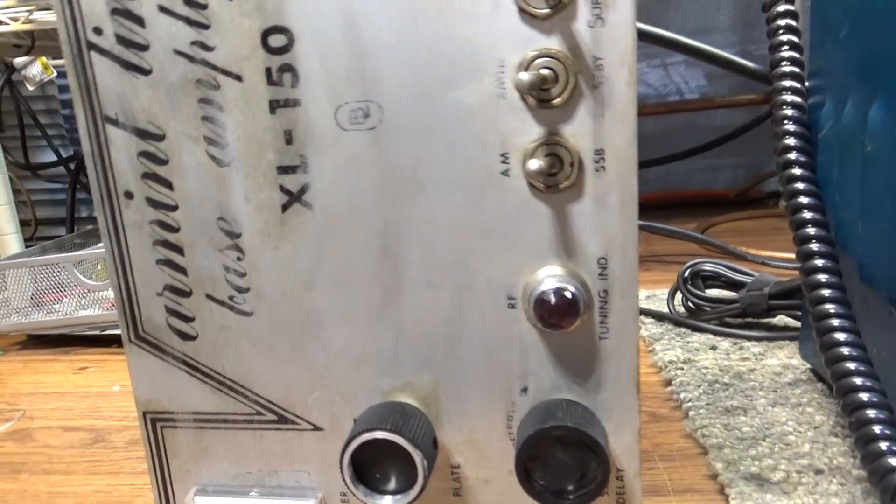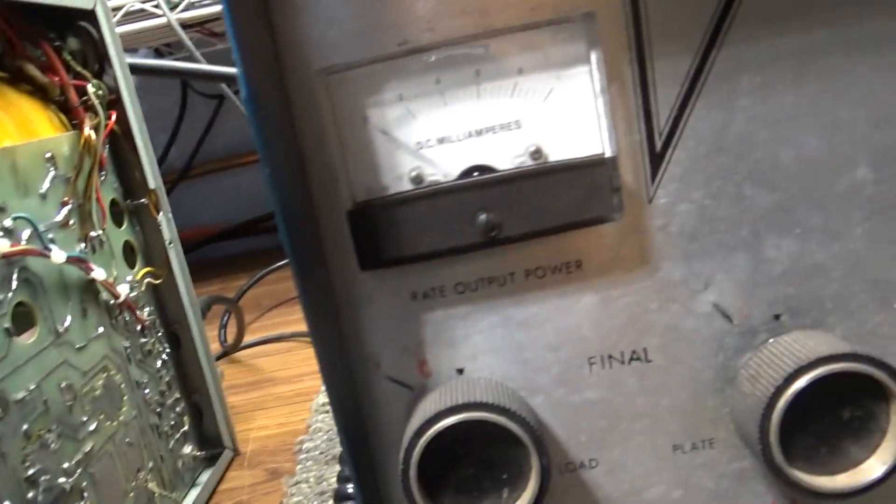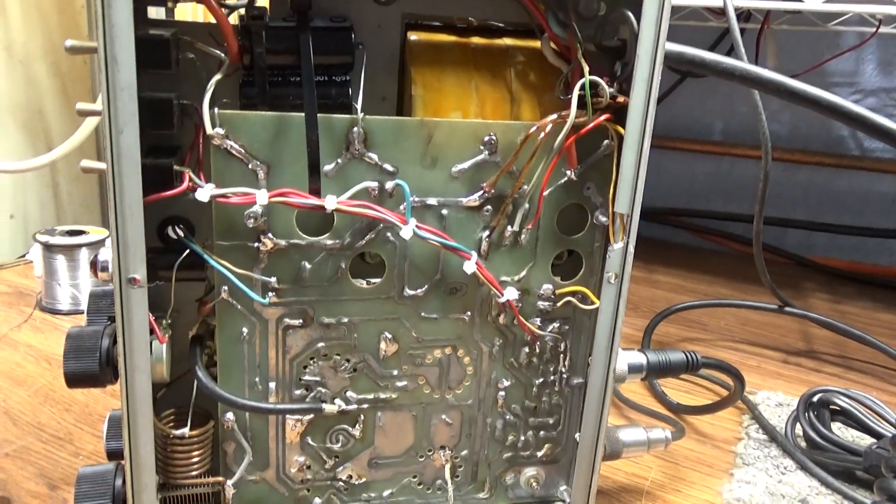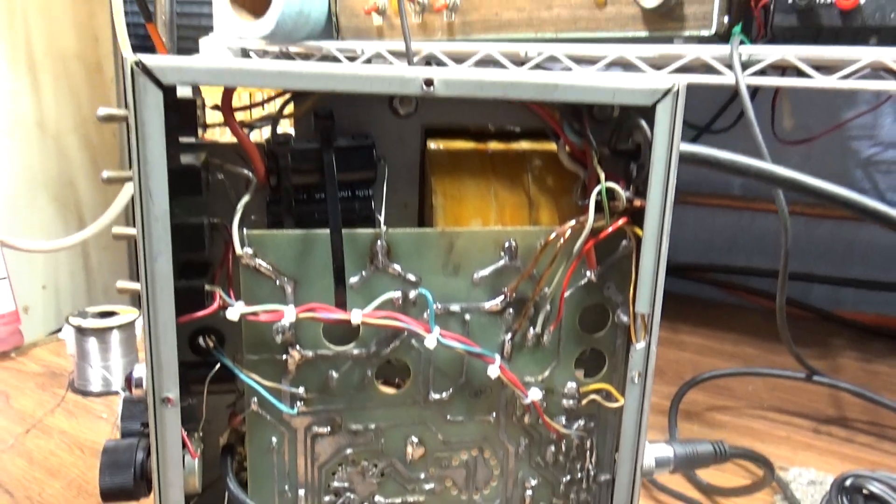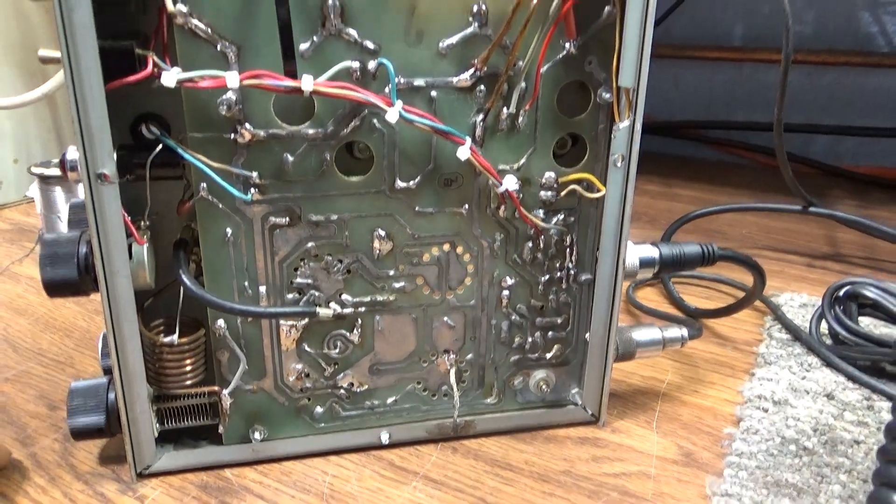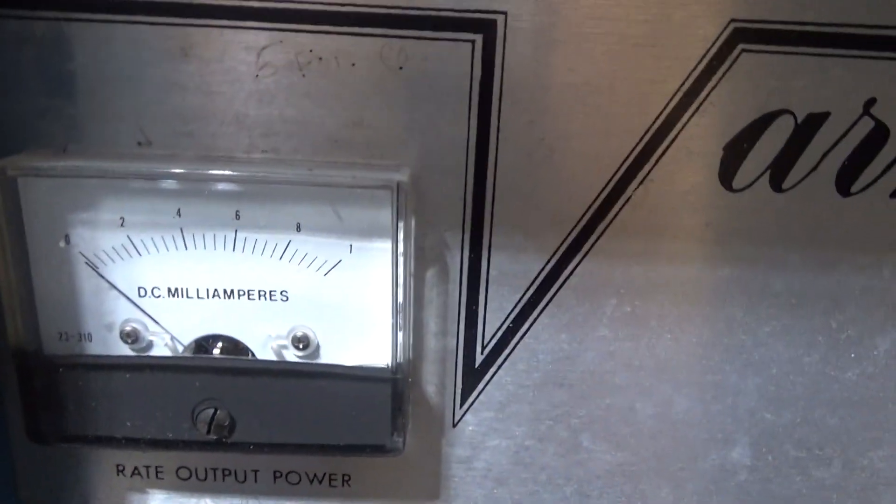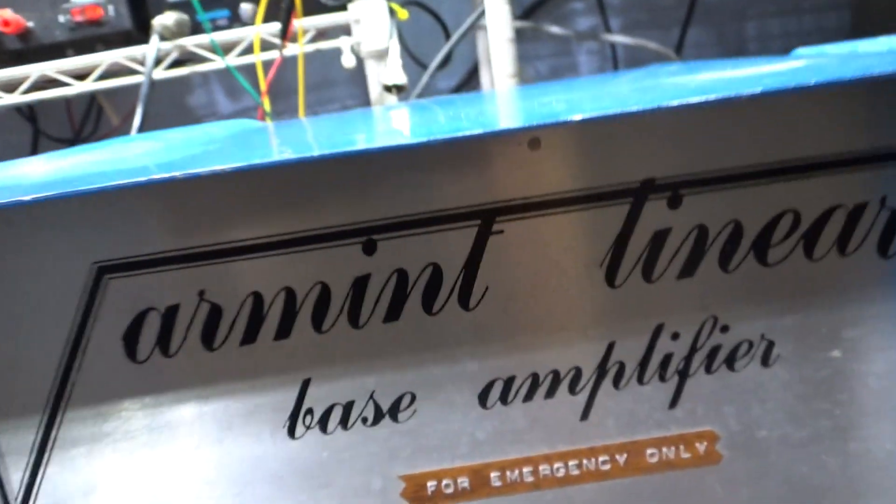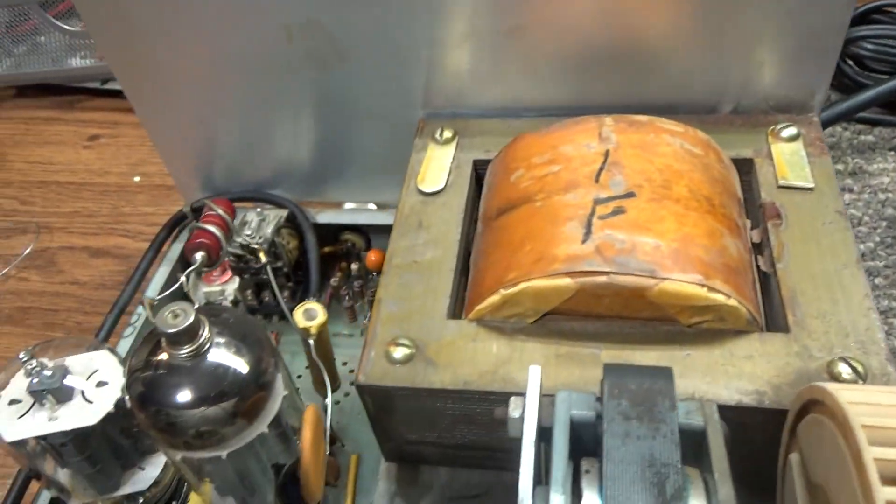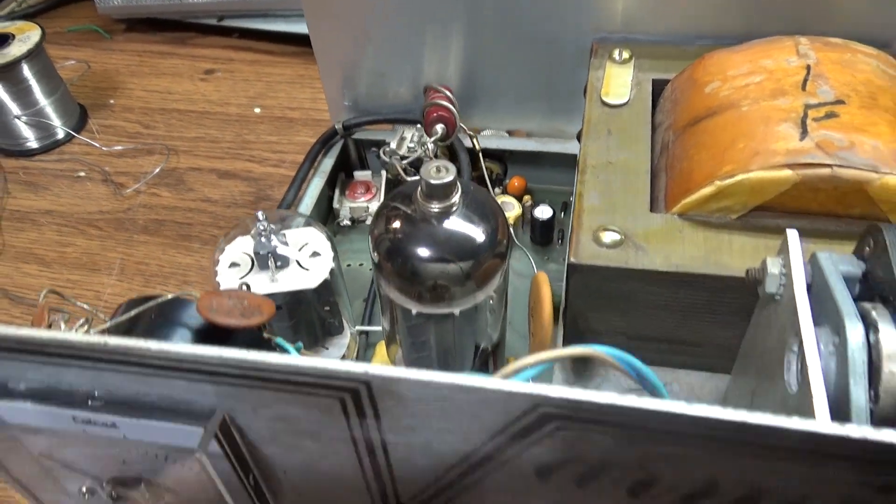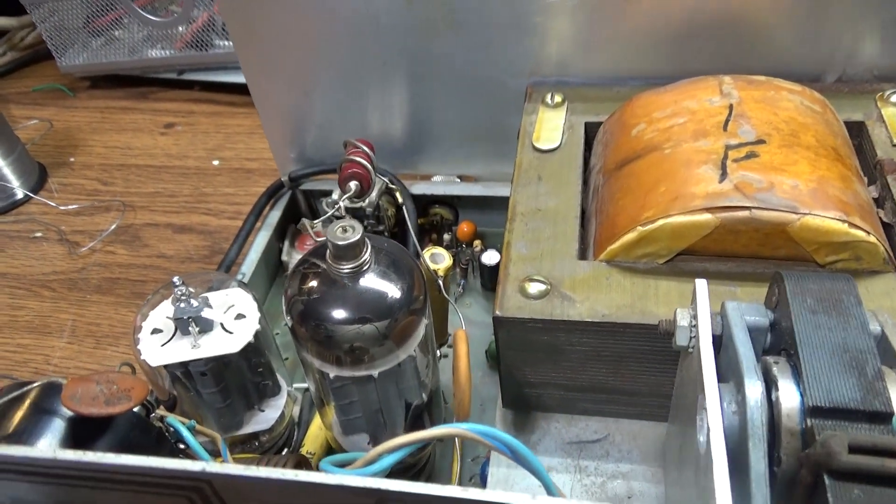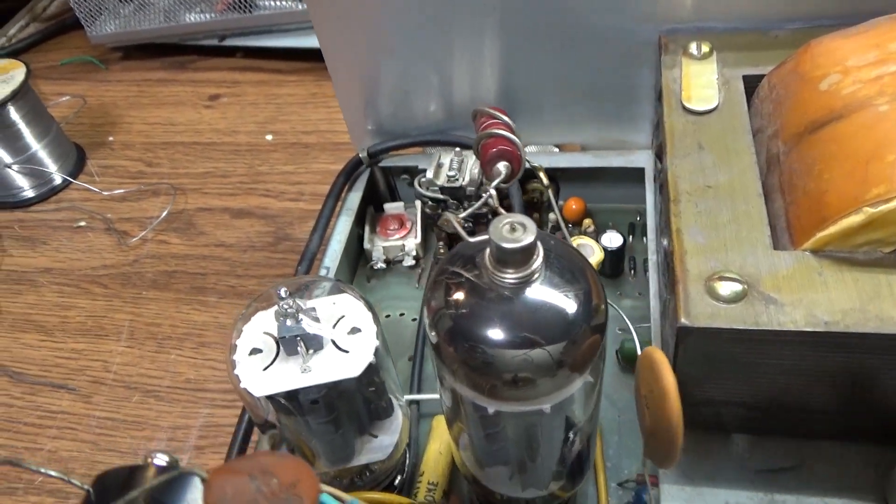The next one is the 150 here, which is one driving one. We left the covers off on the side to show you what the inside looks like. Pretty darn clean for a 50-year-old amplifier.